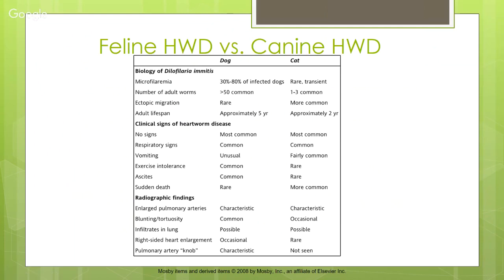Heartworm disease affects cats too — often forgotten. Cats don't need a heavy worm burden for it to be fatal. In dogs, microfilariae are seen in the blood (microfilaremia) in 30–80% of infected dogs; in cats it's very rare and transient. Adult worm numbers greater than 50 are common in dogs; one to three is common in cats. The antigen test detects adult female worm antigen — if there are fewer than two adult females, the test likely won't detect it in cats.